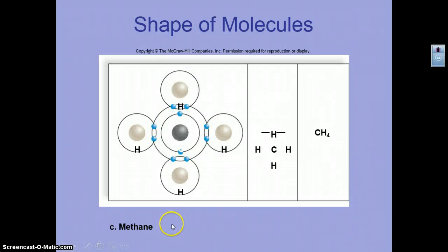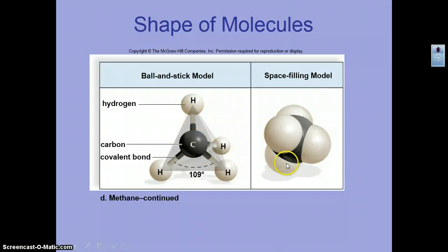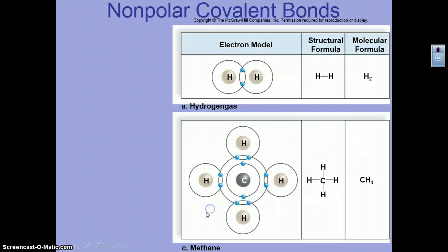We can look at the shape of covalent molecules. Methane shares electrons with hydrogen on the outer orbital. In a ball-and-stick model, methane has a tetrahedral structure with 109-degree bond angles. We can also look at a space-filling model, which shows the space where we expect to find electrons and how atoms are bonded together.